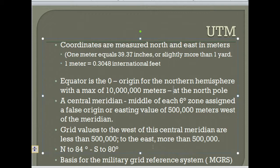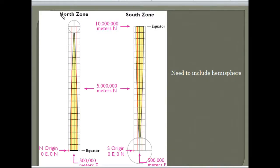UTM only measures to about 84 degrees north and about 80 degrees south. Looking at the northern zone, the origin is the equator, and the zone gets more narrow as you approach the pole because of the shape of the Earth. A central meridian runs down the center of each panel. In the southern hemisphere, counting starts at zero at the south pole, and 10,000 kilometers is the highest value, ending at the equator.